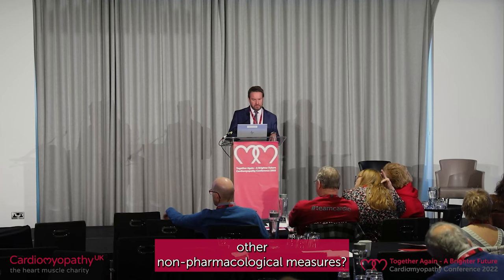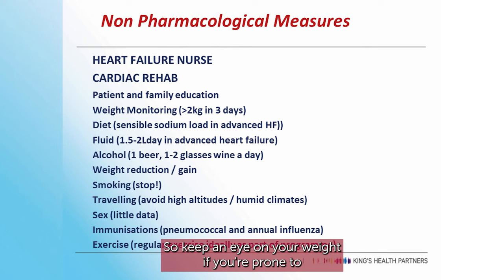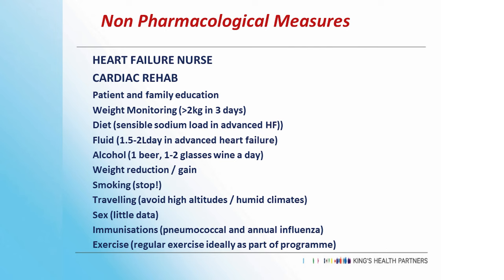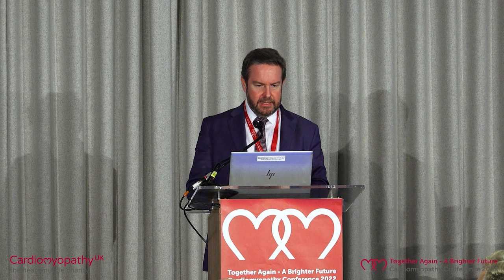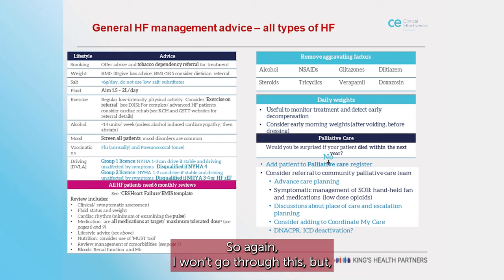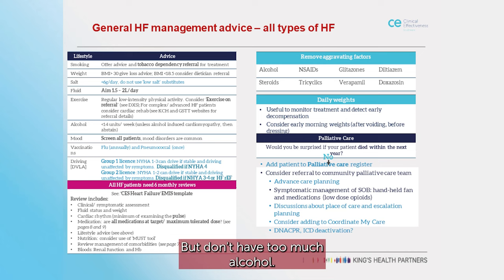Other non-pharmacological measures: keep an eye on your weight if you're prone to putting on fluid, but don't worry about it if you're not. Sensible amounts of alcohol, don't smoke, be careful of very high altitudes if you get breathless, immunisations are important, and exercise — I'll come back to that. The removing of aggravating factors is really important: lots of non-steroidal tablets aren't good for you, some other medicines are bad if you have a weak heart, and too much alcohol is toxic for the heart. A little bit is fine, but don't have too much.